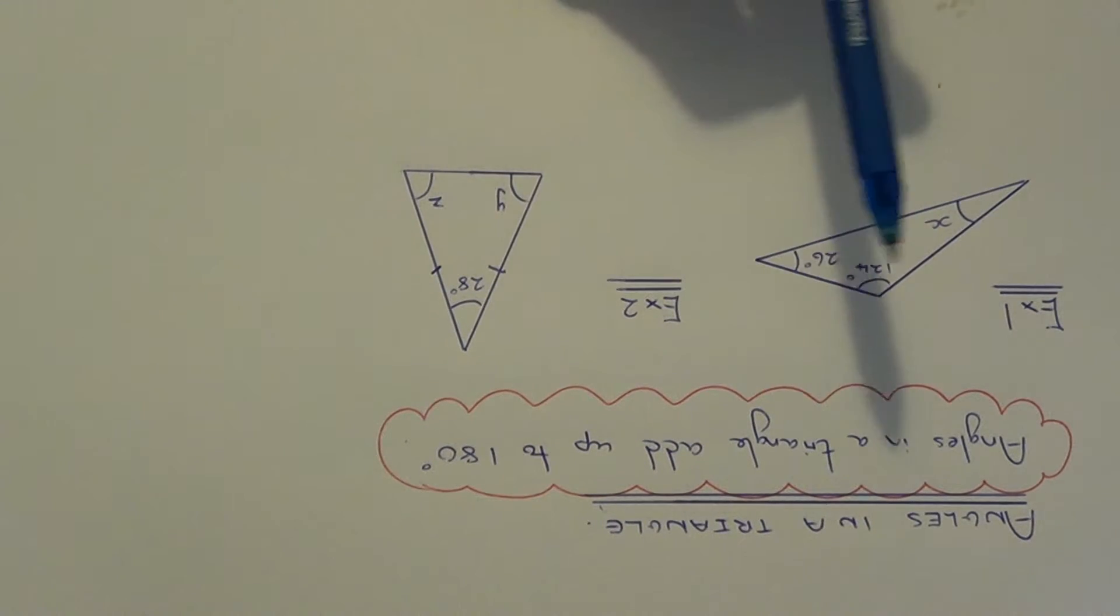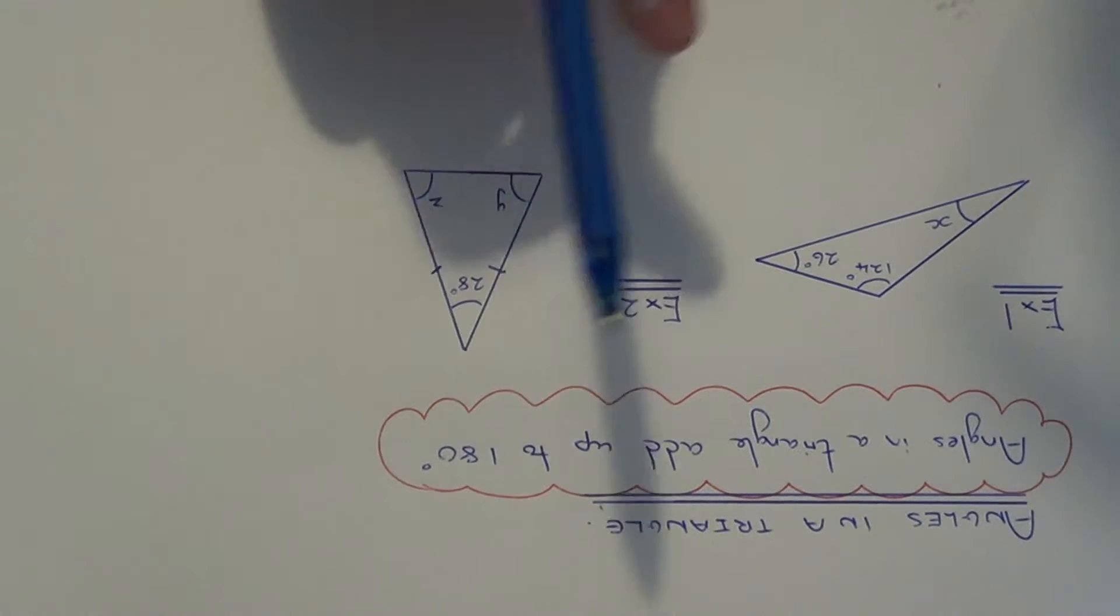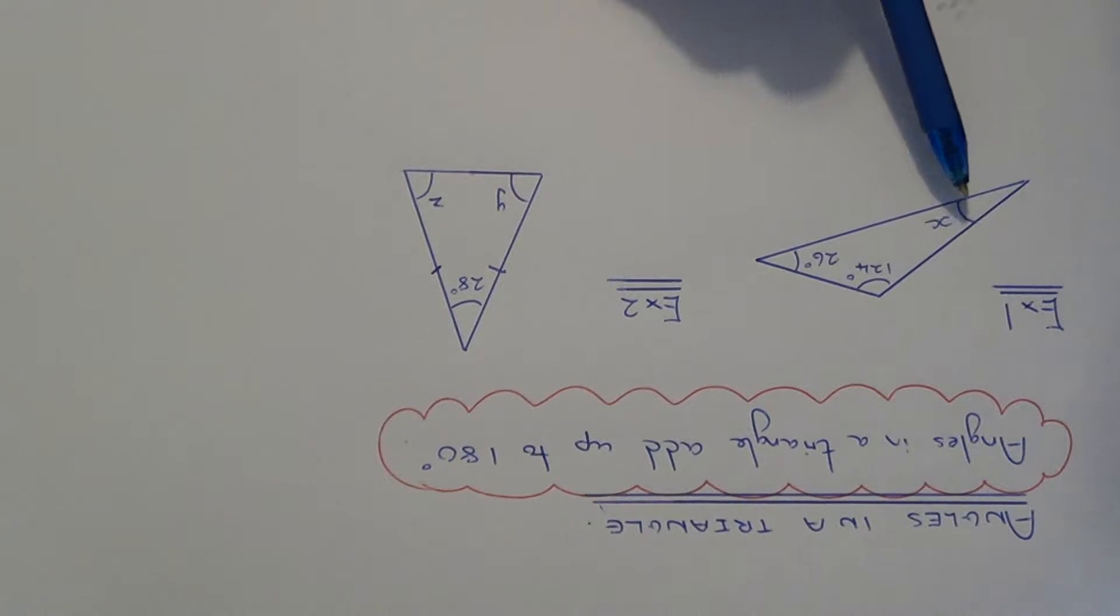Today I'm going to show you a couple of examples on how you can use the angle fact. Angles in a triangle add up to 180. So it doesn't matter what triangle you have, all three angles in the triangle will add up to 180 degrees.